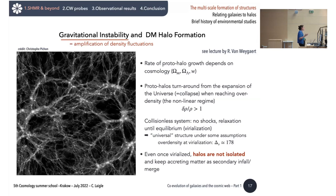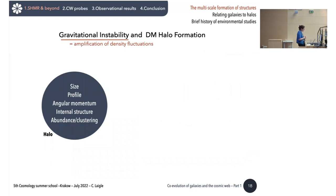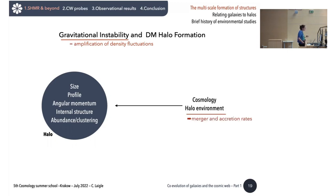We can predict the halo mass function under specific assumptions, but without spherical symmetry this is a very high-dimensional problem, and the way to solve it is to run N-body simulations. We can study halo properties like their size, profile, angular momentum, different structures, abundance of sub-halos, mass function, and two-point correlation function. These properties depend on cosmology, and also depend on the environment, because the environment sets the merger rate and accretion rate of the halo.